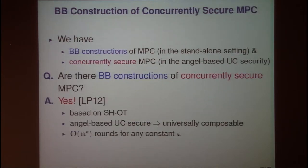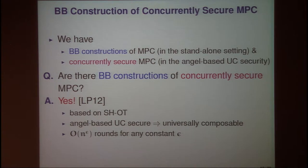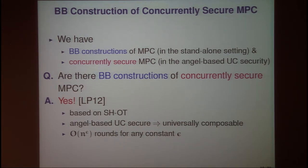From previous work, we know that we have black-box constructions of multi-party computation protocols and concurrently secure multi-party computation protocols. A natural question is whether we have an MPC protocol satisfying both of these properties — that is, whether we have black-box constructions of concurrently secure MPC protocols. In 2012, a prior work showed the answer is yes, by giving black-box constructions of concurrently secure MPC protocols from semi-honest oblivious transfer protocols, with security proven in engine-based UC security, making the protocol universally composable.